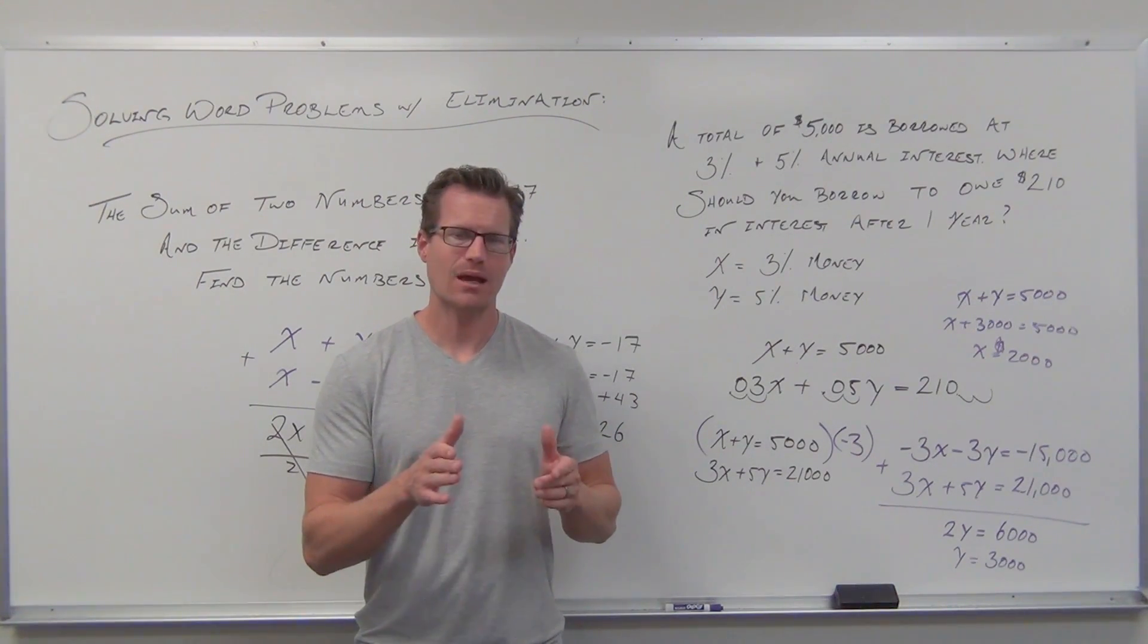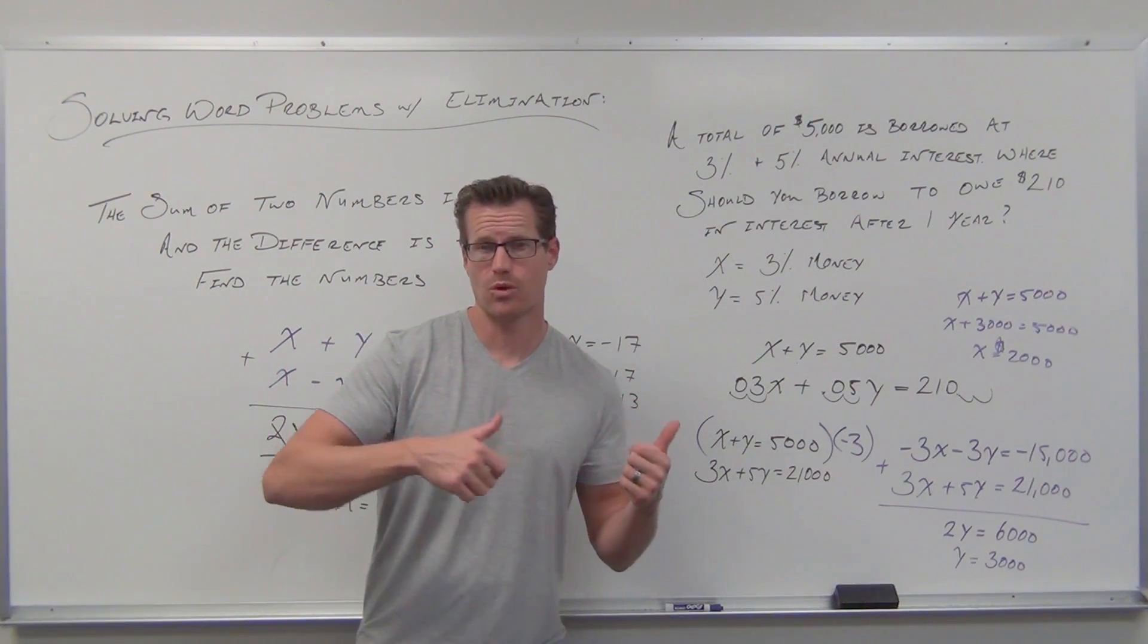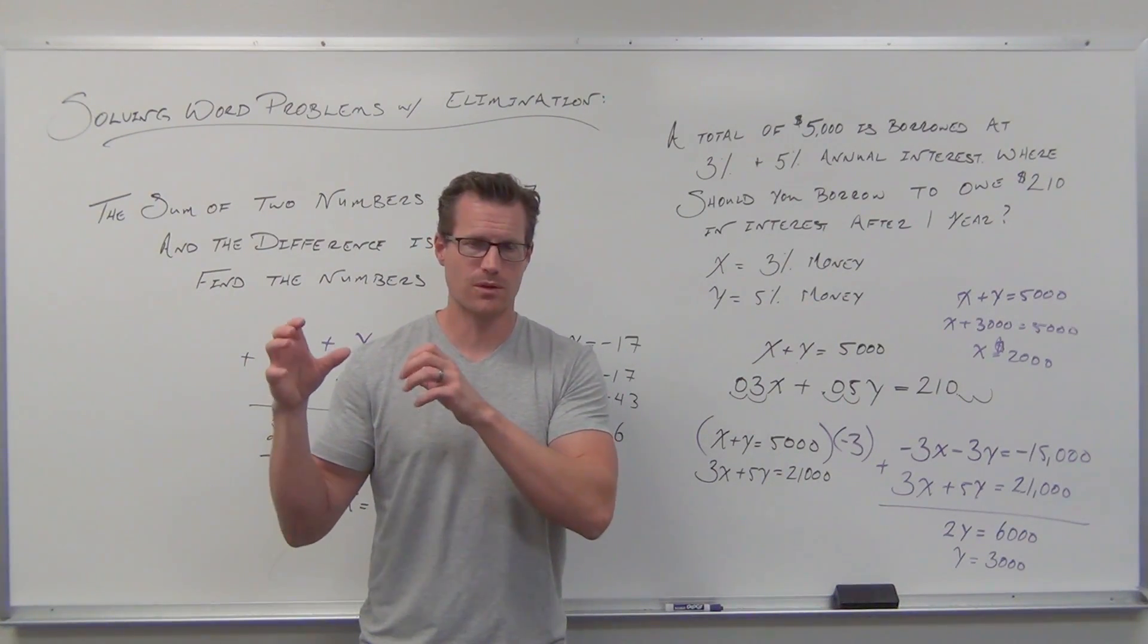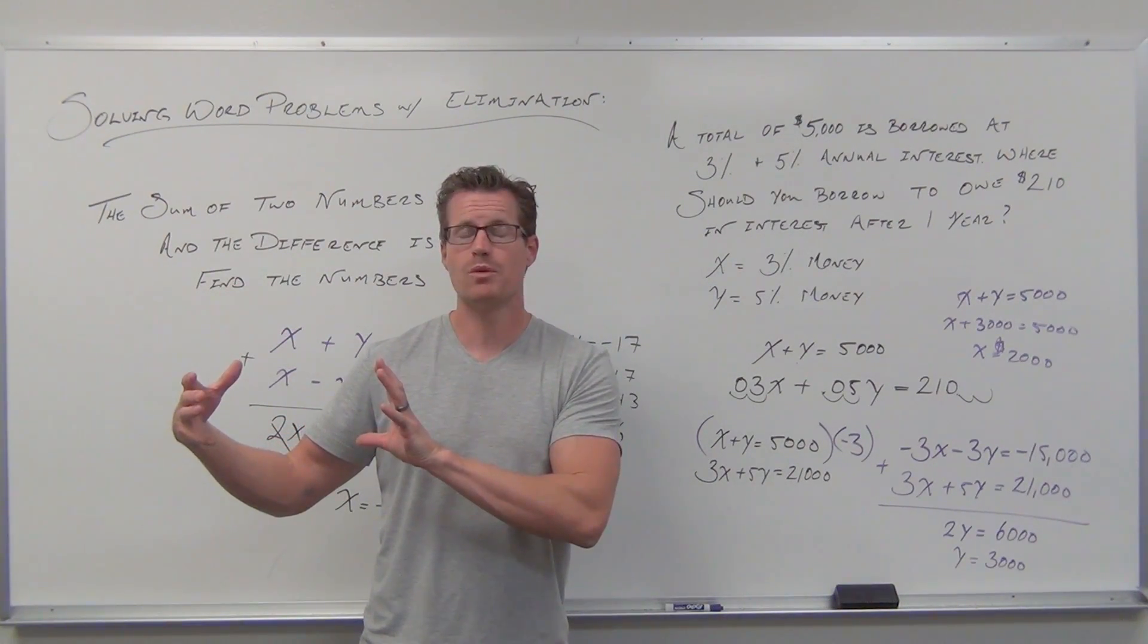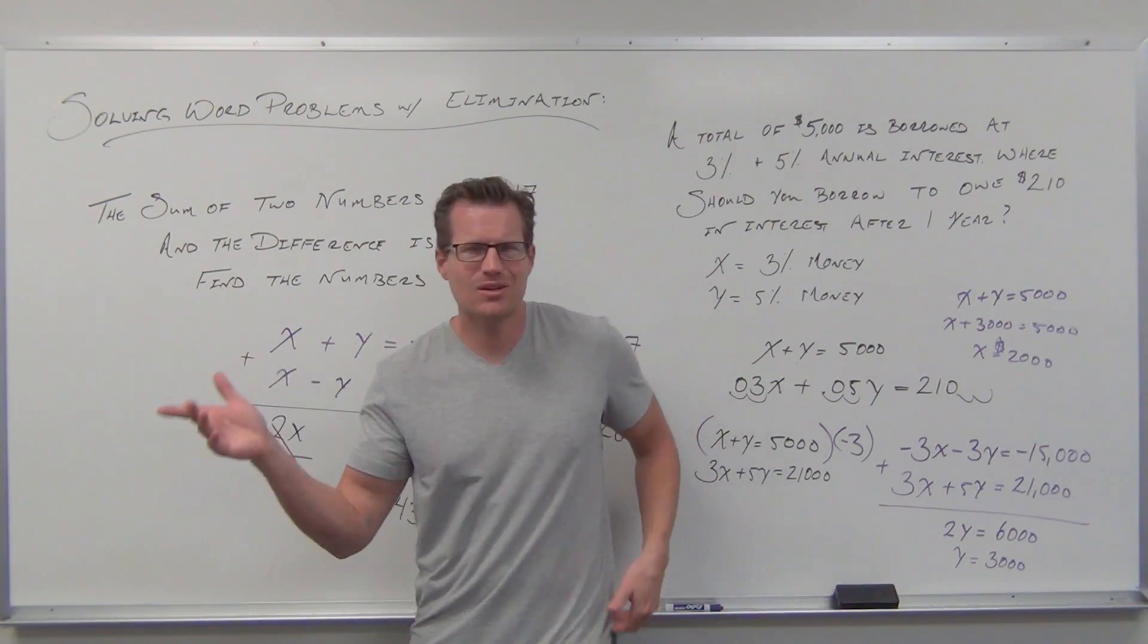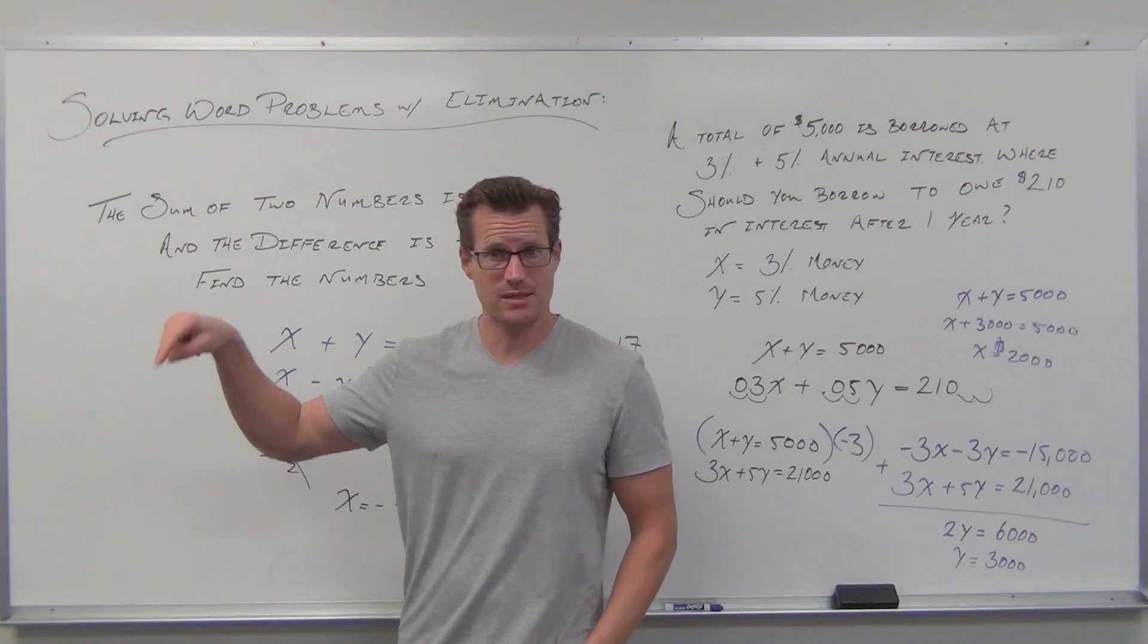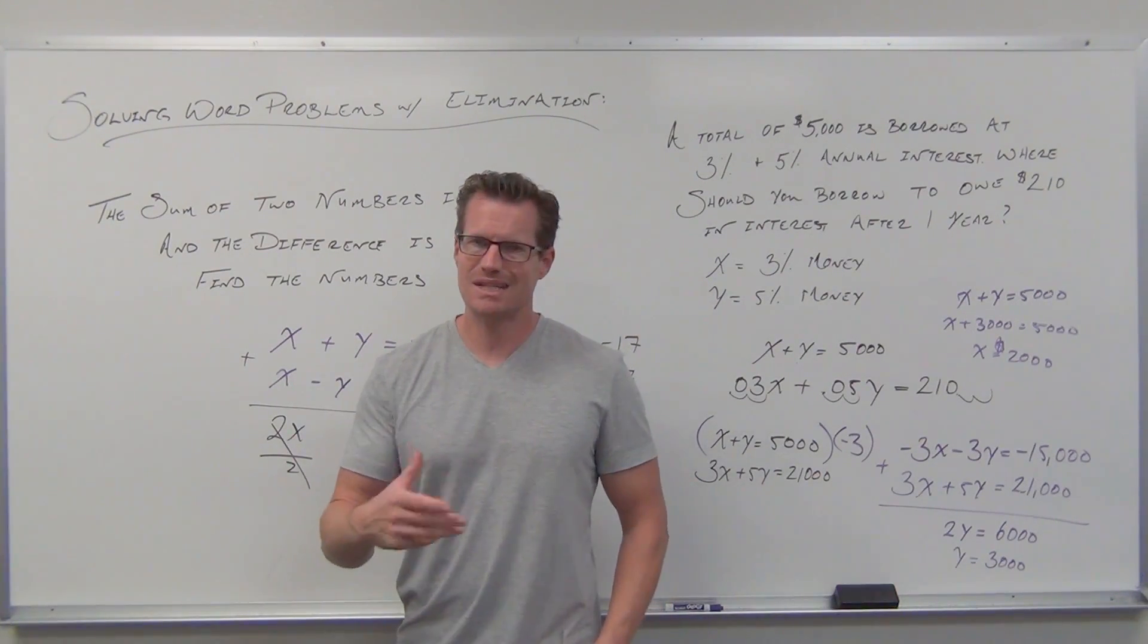I challenge you to go back to the word problems we did with substitution method and way back in linear equations with one variable. See which ones for linear equations can be solved with systems, and go back to substitution and see which ones would have been better served by elimination method. Look through them and see if you could have done that mixture or perimeter problem with two variables.